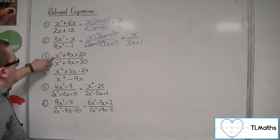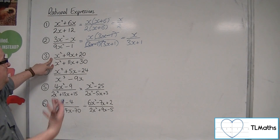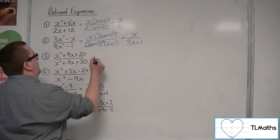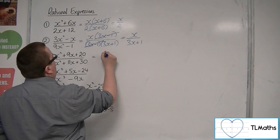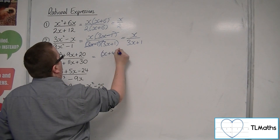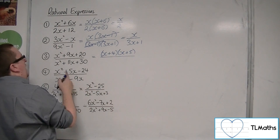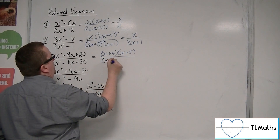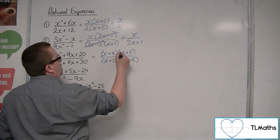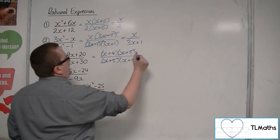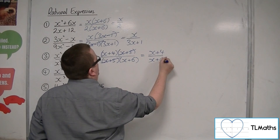Number three, we have two quadratics — numerator and denominator — so we're going to try and factorise them both. So we're going to have x plus 4 times x plus 5 in the numerator, and x plus 5 times x plus 6 in the denominator. Clearly we have a common factor of x plus 5, so we just have x plus 4 over x plus 6, and that's as far as I can go.